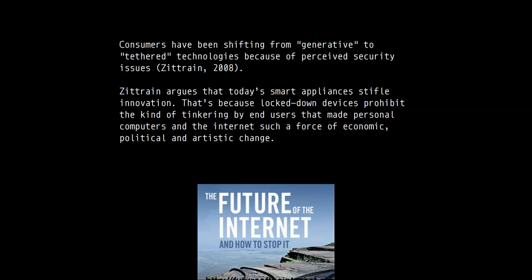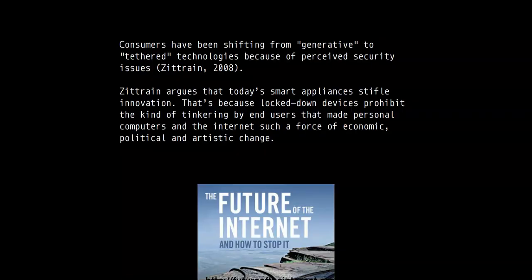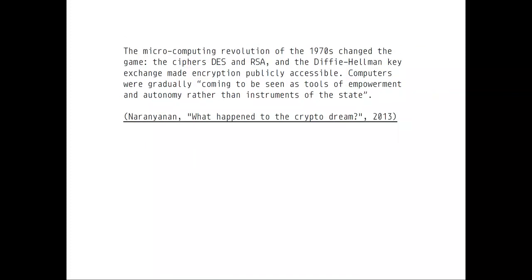This reminds me of the situation in the 1960s and 70s when computers were delivered and the whole manufacturing process was made for enthusiasts and tinkerers — you would buy computers as parts to assemble yourself. The first computer that was really pre-assembled was the Altair 8800 in 1975. The Apple I versus the Apple II is also a good explanation: the Apple I was a device you had to basically assemble yourself, while the Apple II came pre-assembled. These devices started the microcomputing revolution, which was important because it introduced the first availability of cryptography.